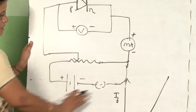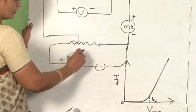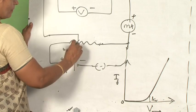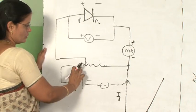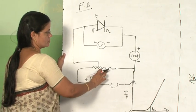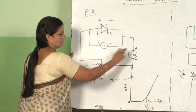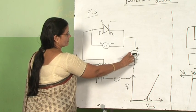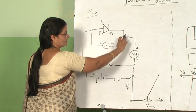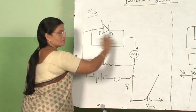So from this arrangement, what we will do? After closing the key, we will be adjusting the voltage applied across the P-N junction diode using this potential divider arrangement. And every time, milliammeter reading will be noted down. The milliammeter reading will give you the forward current passing through the P-N junction diode.